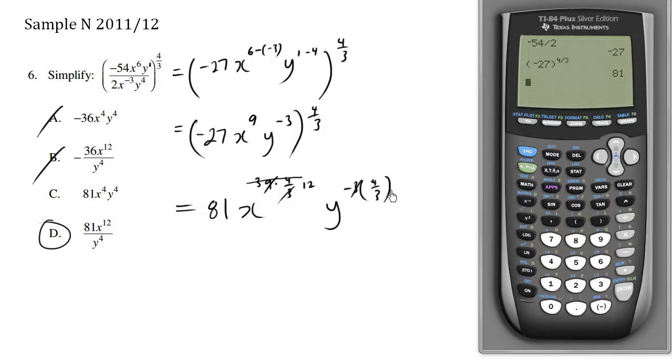So here we have the 3s canceling out, we have y to the negative 4. Y to the negative 4 means the y ends up being a positive 4 if you put it on the denominator, if you switch it from the numerator to the denominator. So certainly, choice D is the answer. Excellent.